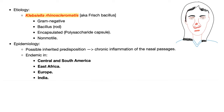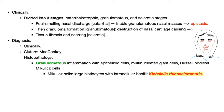What causes rhinoscleroma? There is a possible inherited predisposition leading to chronic inflammation of the nasal passages. It's endemic in Central and South America, East Africa, Europe, and India. It has three stages: catarrhal, granulomatous, and sclerotic. First, you have foul-smelling nasal discharge — that's the catarrhal phase. Then friable granulomatous nasal masses leading to nosebleed. Then granuloma and destruction of the nasal cartilage, causing fibrosis and scarring — this is the sclerotic phase.